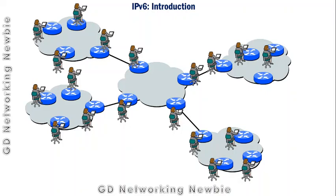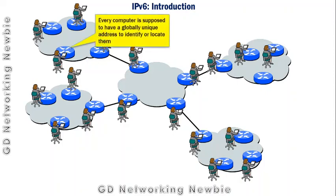In the global network we have many nodes using internet services, and every computer or every node is supposed to have a globally unique address to identify and locate them — just like we as a person have our name, state name, and city name. So every node also needs to have an address.